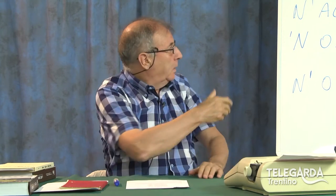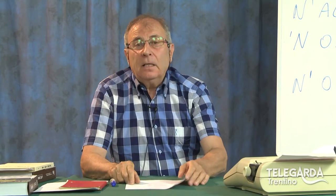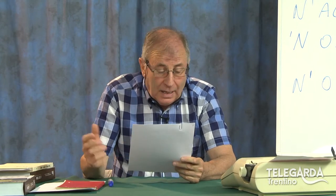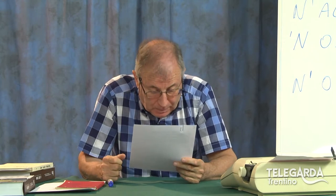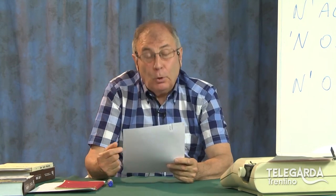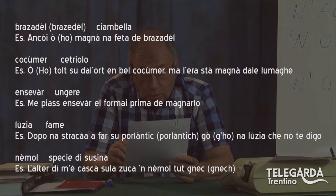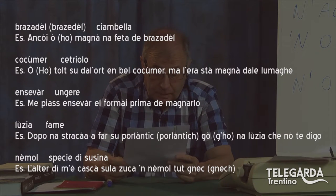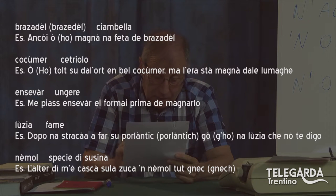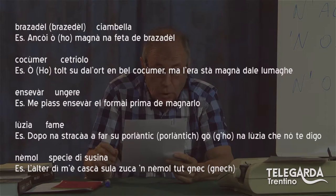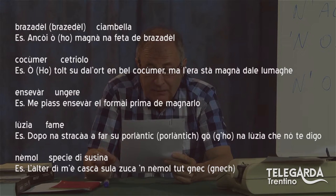Detto questo, spiegato quindi N'oselet, N'om, N'alber, qualcosa della filastrocca e della metrica — vado adesso al vocabolario, che questa volta mi permetto di accompagnare ogni vocabolo con un esempio. Incominciamo con brazzadel — o a Trento dicono brazzedel — è la ciambella. Esempio: Ankoi o magnà — vedete 'o' scritto in due maniere diverse: forma arcaica con accento aperto, oppure o con l'h — quindi ankoi o magnà, na feta de brazzadel.